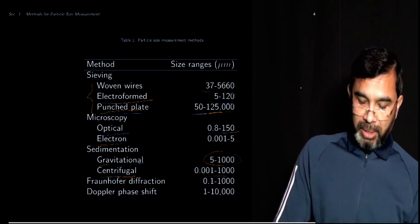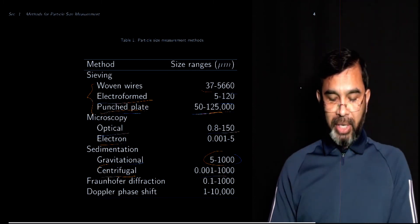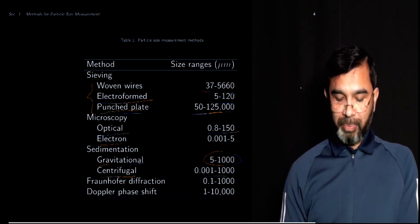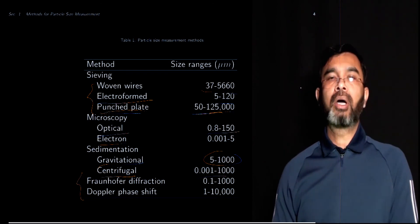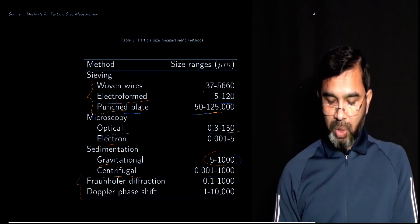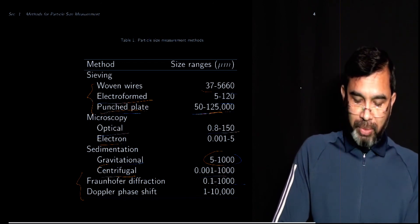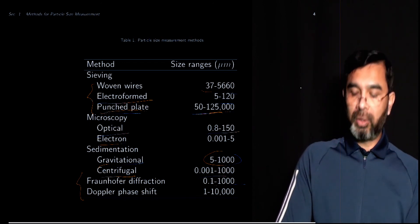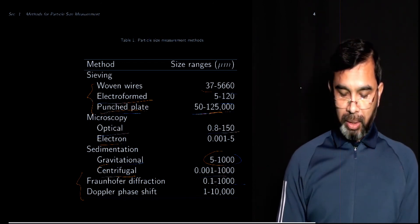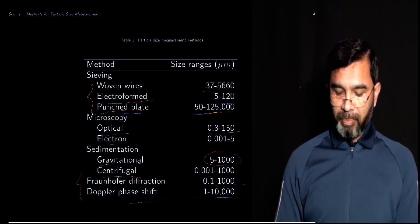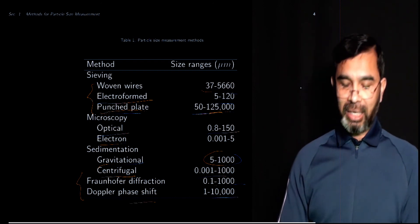The other techniques, Fraunhofer diffraction or the Doppler phase shift, are based on optical methods. We can use them for smaller particles. For Fraunhofer diffraction, 0.1 micron to a millimeter, or for Doppler phase shift you can measure between 1 micron to 10 millimeters.